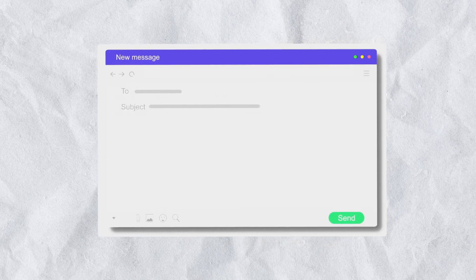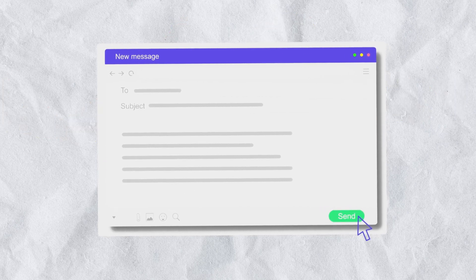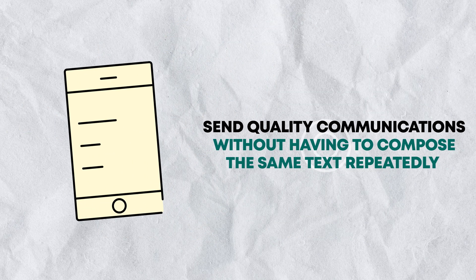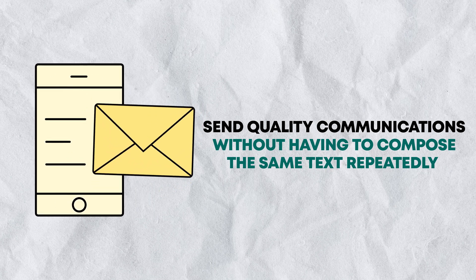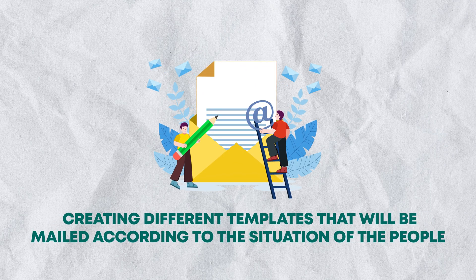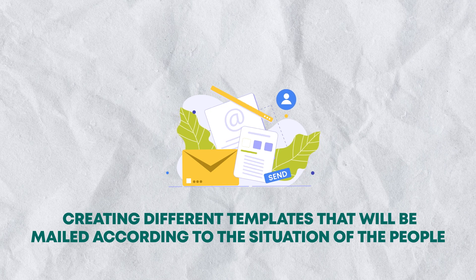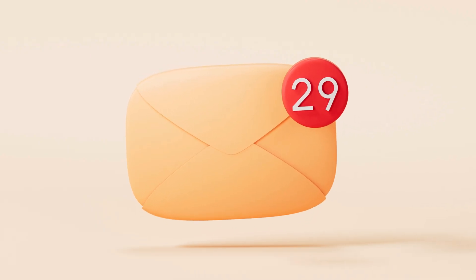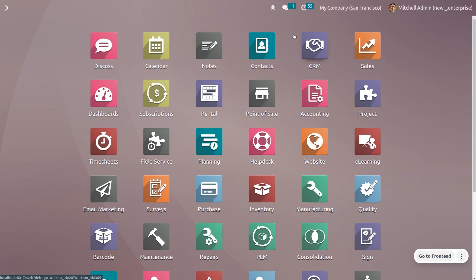Email templates are saved emails that are used repeatedly to send emails from the database. They allow users to send quality communications without having to compose the same text repeatedly. Creating different templates tailored to specific situations lets users choose the right message for the right audience, increasing the quality of the message and overall engagement rate with customers. Let's see how to manage email templates in Odoo 16.